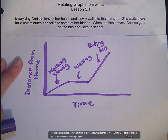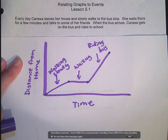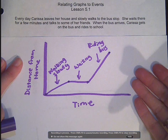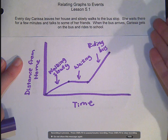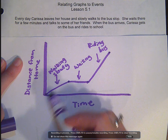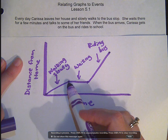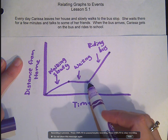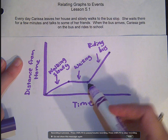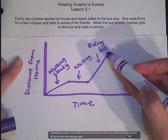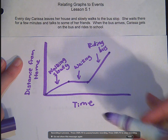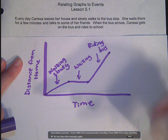What we just did is sketch a graph from the situation. This was her walking slowly to the bus stop, waiting at the bus stop where distance isn't increasing, then getting on the bus and riding the rest of the way to school. This graph represents the situation.